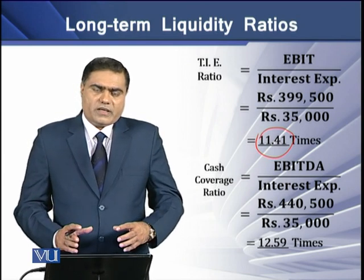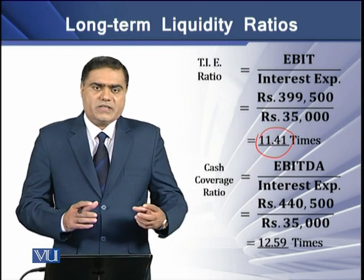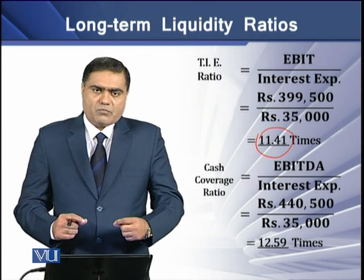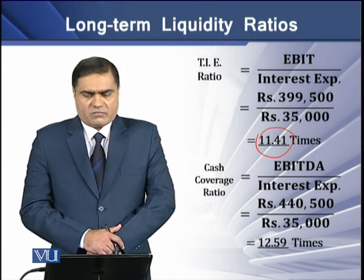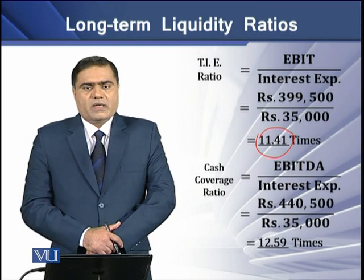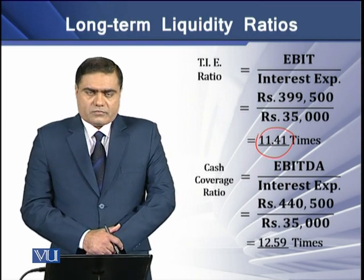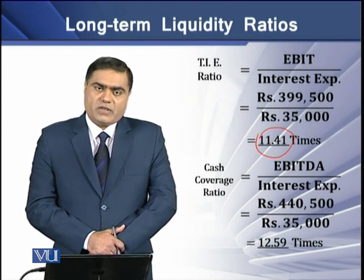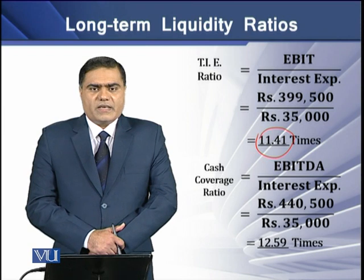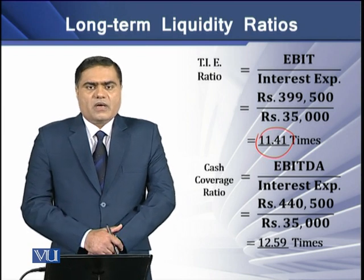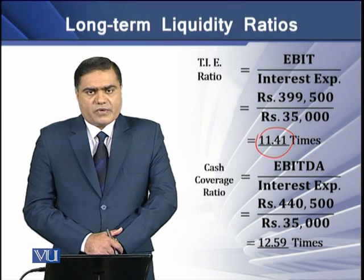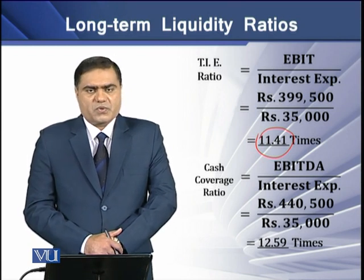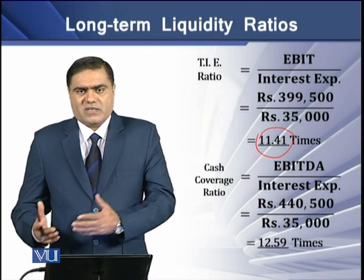This means that the firm has 11.41 times profit over its interest expense — the firm has earned so much profit that it can pay off its interest expense more than 11 times. The minimum benchmark for this ratio should be one, meaning a firm at least earns earnings before interest equal to its interest expense so that it can cover its interest expense safely.